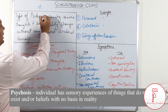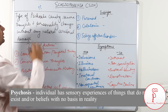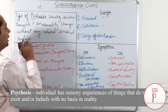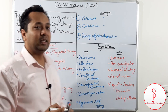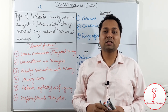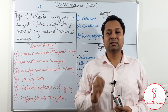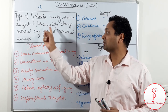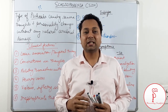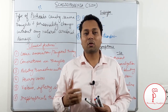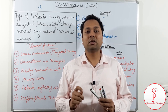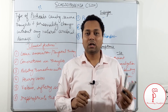Schizophrenia is a type of psychosis that causes severe thoughts and personality changes without any natural cerebral damage, which means that in schizophrenia there are personality disorders and thought disorders, but if we see the morphology of the brain — the morphology of the cerebrum — there are no natural damages to the brain.